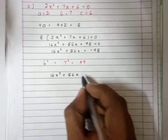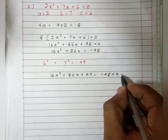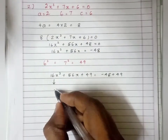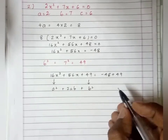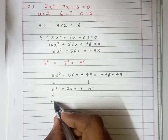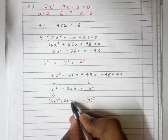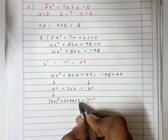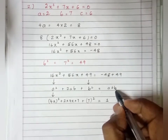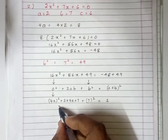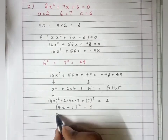Now add 49 on both LHS and RHS: 16x² + 56x + 49 = -48 + 49. This is of the form a² + 2ab + b². Here 16x² = (4x)², 49 = 7², and 2ab = 2 × 4x × 7. So -48 + 49 = 1, giving (4x + 7)² = 1.